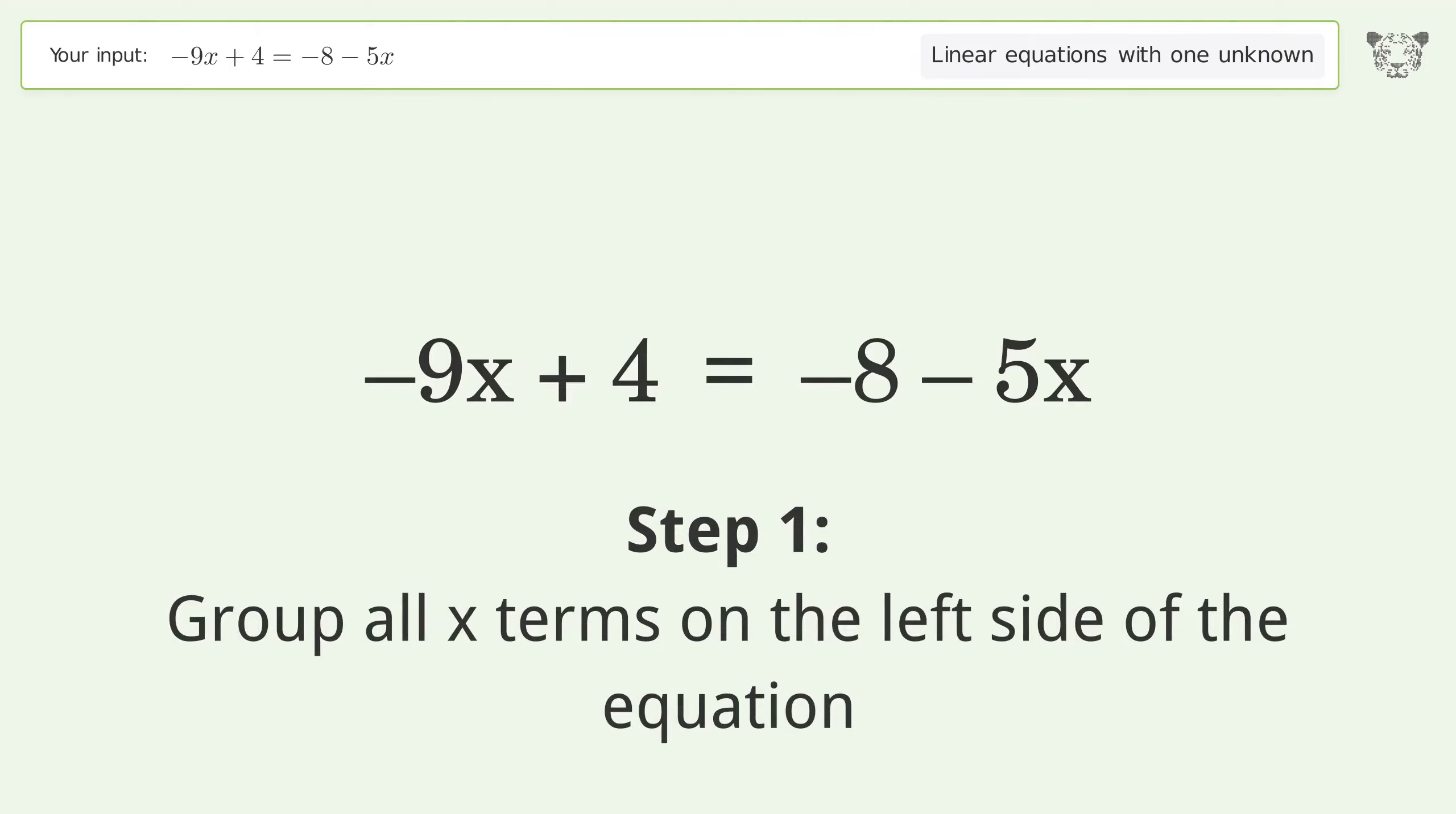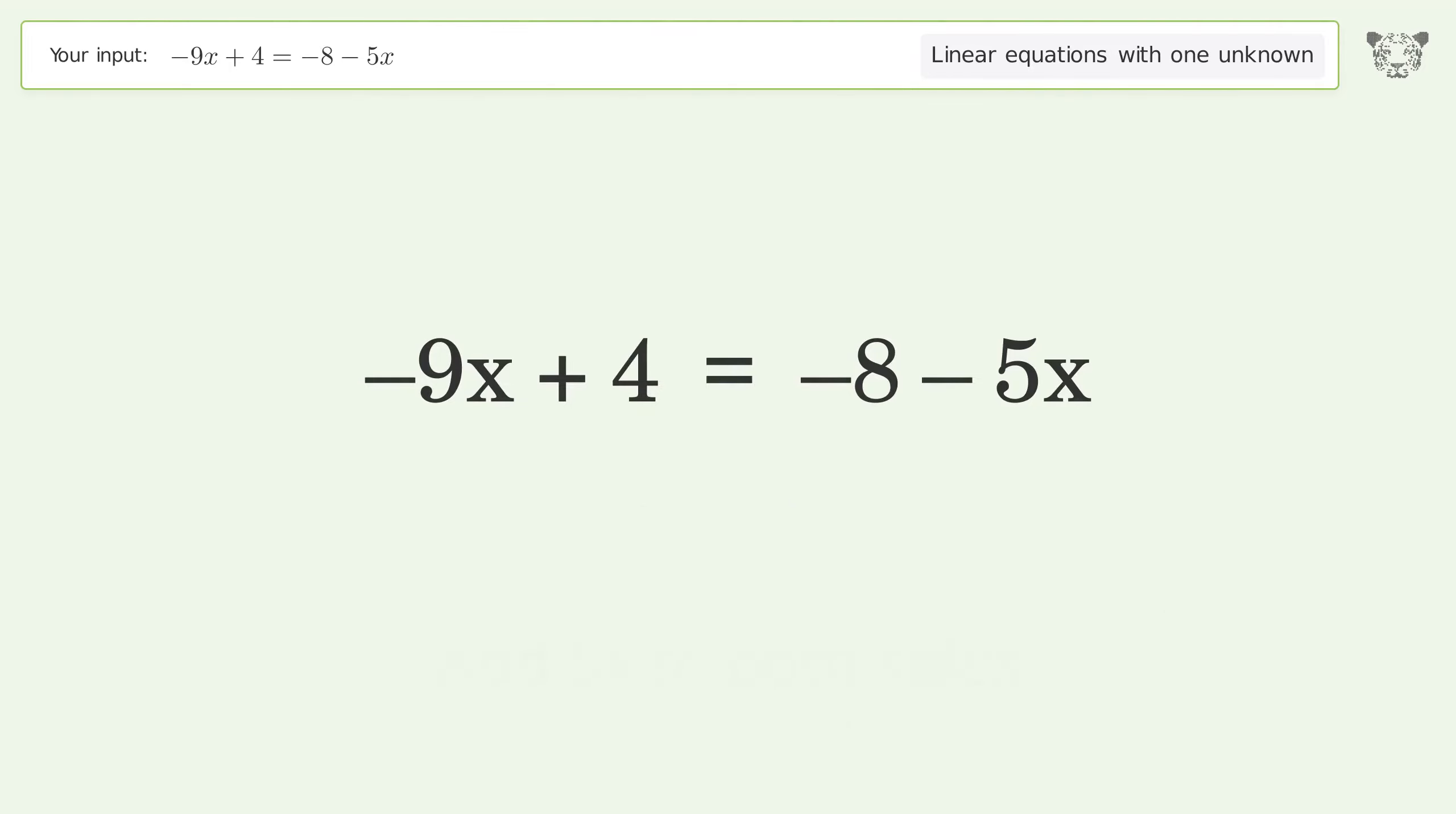Group all x terms on the left side of the equation. Add 5x to both sides. Group like terms. Simplify the arithmetic.